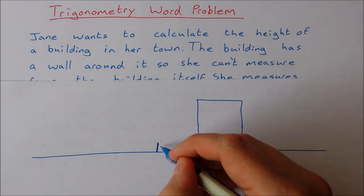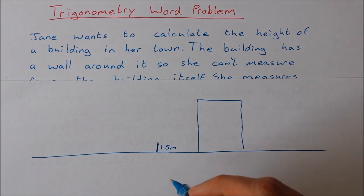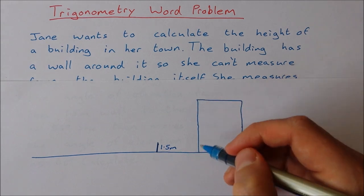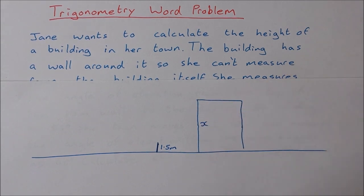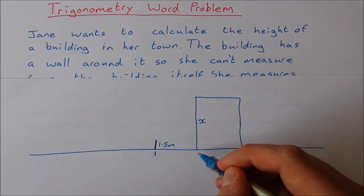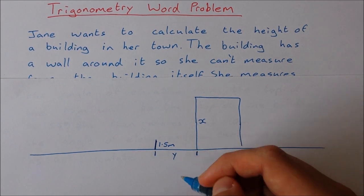This wall is 1.5 meters high. The height of the building is what we're looking for. That's x. Now we don't know what this distance here is. Let's call that y.